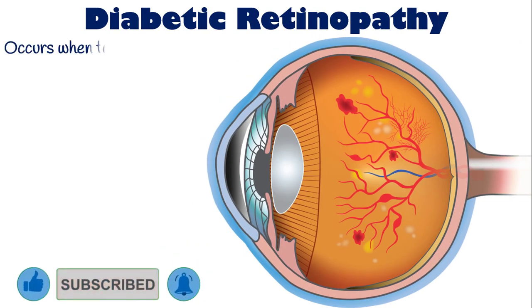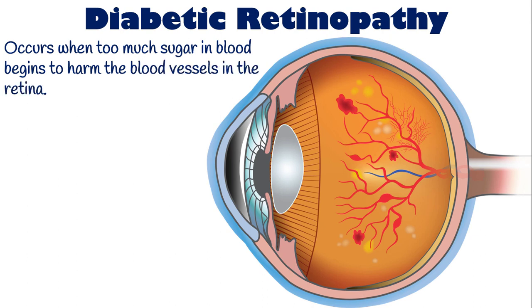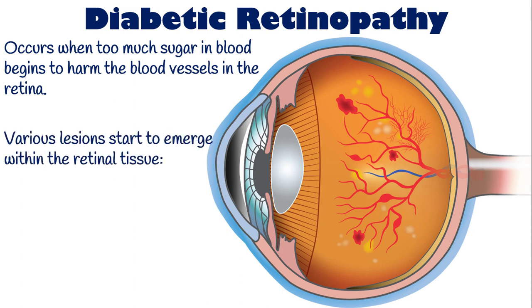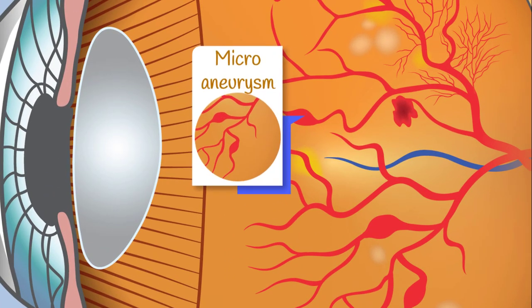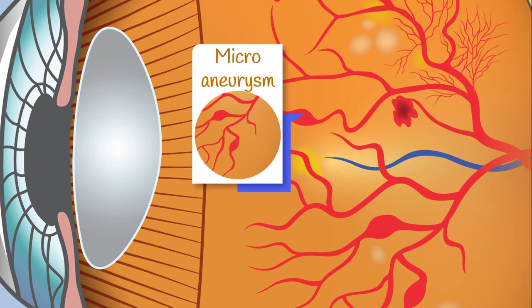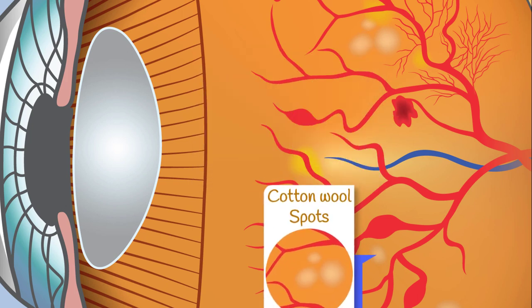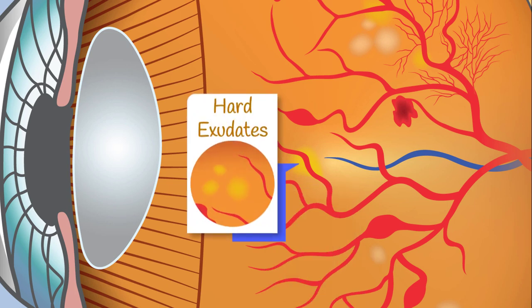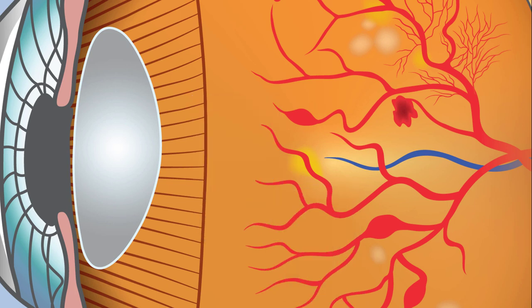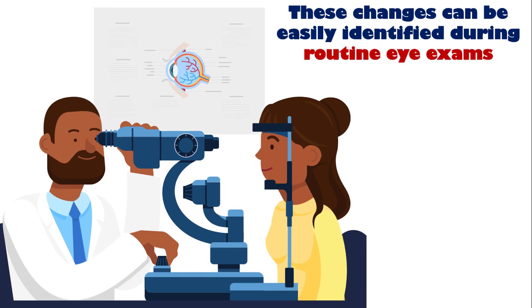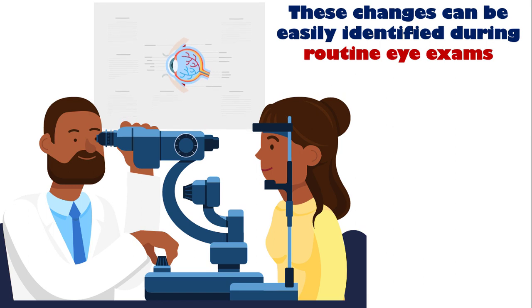The most common and potentially serious eye condition related to diabetes is diabetic retinopathy. It occurs when too much sugar in the blood begins to harm the blood vessels in the retina, the light-sensitive tissue at the back of the eye. As a consequence of this damage, various lesions start to emerge within the retinal tissue. These include microaneurysms, which are tiny bulges that protrude from the blood vessels, bleeding within the retina, cotton wool spots, which are fluffy white patches, and yellowish hard exudates. Thankfully, these changes can be easily identified during routine eye exams, so it's important to seek regular eye checkups to catch these symptoms early and prevent further damage.